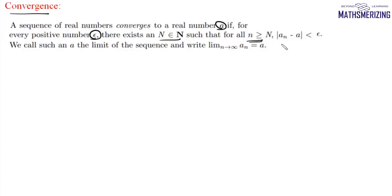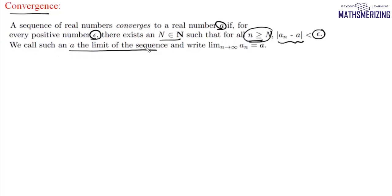If we can find such an N for all values of epsilon, however small it may be, then we call a the limit of the sequence and write: limit as n tends to infinity of aₙ equals a. This is the formal definition to check convergence of a sequence.